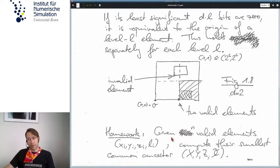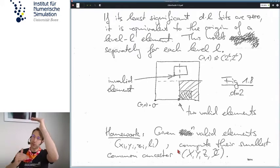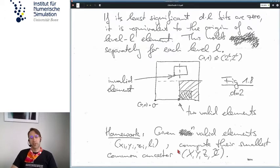As a bit of homework to get used to this convention, I suggest you figure out some kind of formula or algorithm or expression where you have n valid elements indexed with i: x_i, y_i, z_i being the coordinates, L_i the level for each one. Then we know all of them are somehow descendants of the biggest root element, but maybe they are all descendants of some smaller element. So the task is to compute their smallest common ancestor, big x, y, z and L tilde by some preferably simple formula.